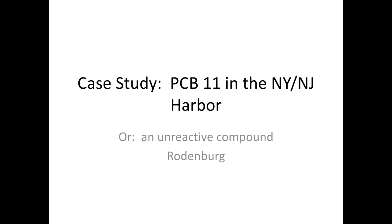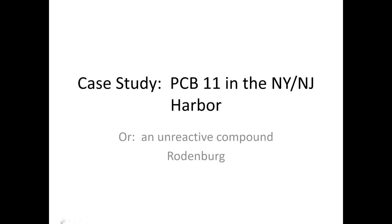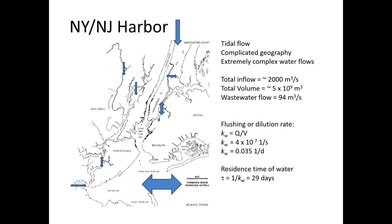The first case study is PCB 11 in the New York/New Jersey Harbor — an example of an unreactive compound with no chemical reactions, so we only consider physical processes. The NY/NJ Harbor is a very complicated system. PCB 11 is coming in from a number of different places, including through the outfall of the Passaic Valley Sewerage Commission, whose pipe runs beneath Bayonne and comes out in the upper New York Bay.